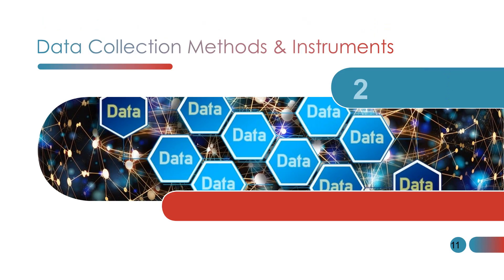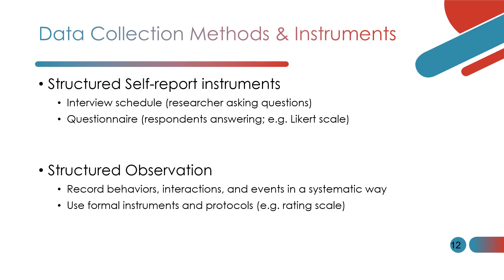Now let's talk about data collection methods and instruments. This is an overview — read Paulette and Beck 11th edition for more details. One method is a structured self-report instrument. One example is the interview schedule, which is a structured interview where the researcher asks the questions. If it's a questionnaire, the respondent answers the questions themselves. One example is the Likert scale — for instance, zero to ten, where zero is no pain and ten is the worst pain you've ever had, which is a ten-point Likert scale.